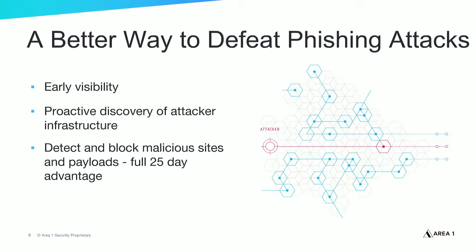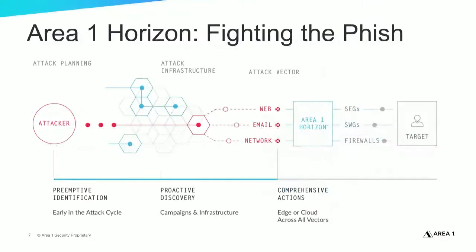Just as radar gave the RAF early visibility to incoming bombers so they could intercept them and minimize harm, Area 1's technology crawls the web continuously and proactively discovers phishing campaigns and infrastructure before cyber attacks launch. On average, Area 1 Security detects malicious sites and payloads a full 25 days before other industry threat intelligence sources such as VirusTotal. Because we proactively hunt for new phishing infrastructure as it's set up, we have early visibility into phishing sites, payloads, malware, and compromised servers before phishing campaigns launch. The resulting early insight powers Area 1 Security's Horizon anti-phishing service to detect and block phishing threats that legacy security technologies — including sandboxes — miss.